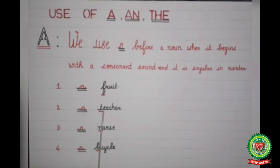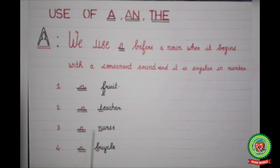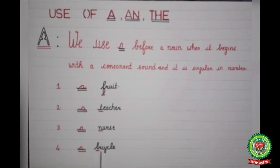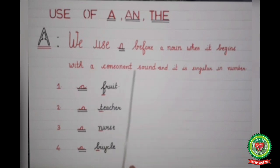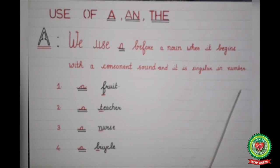Next example: 'a nurse' — the word 'nurse' starts with a consonant sound N, so we have written 'a nurse'. Next example: 'a bicycle' — the word 'bicycle' begins with a consonant sound B, so we have written 'a bicycle'. To repeat the rule: we use 'a' before a noun when it begins with a consonant sound and it is singular in number.